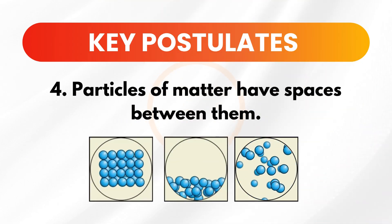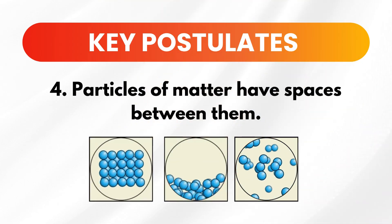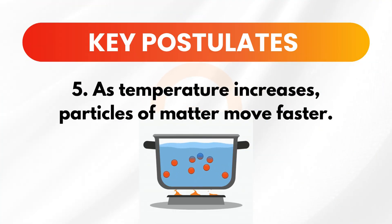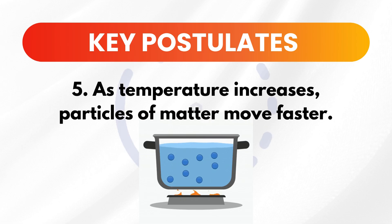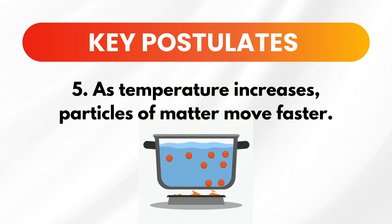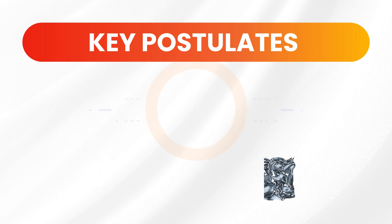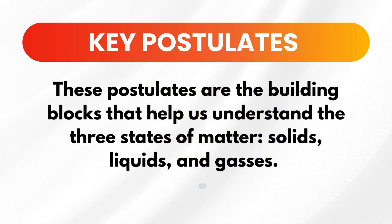Number 4: Particles of matter have spaces between them. These spaces are much larger in gases than in solids, which is why gases can be compressed. Number 5: As temperature increases, particles of matter move faster. Think about boiling water — as it heats up, the water molecules move faster until they escape as steam. Number 6: Atoms of the same element are essentially identical, and atoms of different elements are different. This is why gold and silver, though both metals, have different properties. These postulates are the building blocks that help us understand the three states of matter: solids, liquids, and gases.